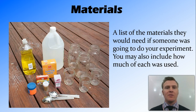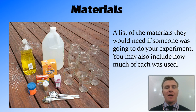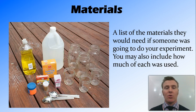The materials list is simply a list of the materials that you need to do the experiment, so that if somebody is reading your experiment they can replicate it. As part of this, you may or may not want to include the total amount of materials that you used, so that somebody setting it up can work out how much they need.